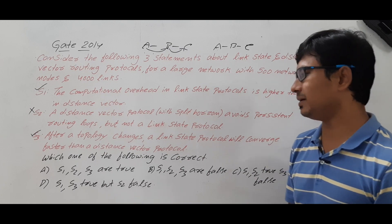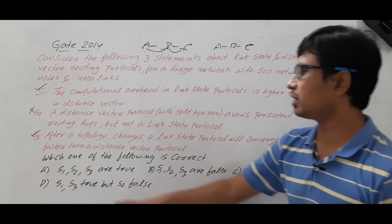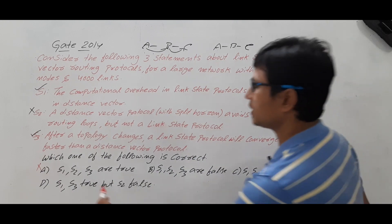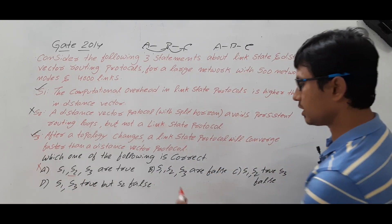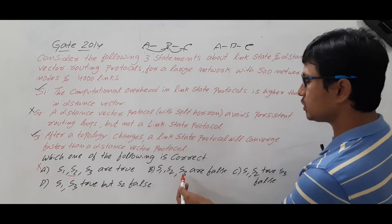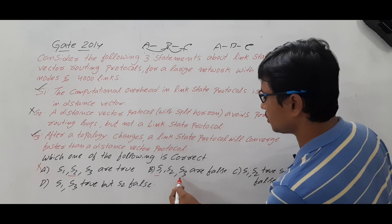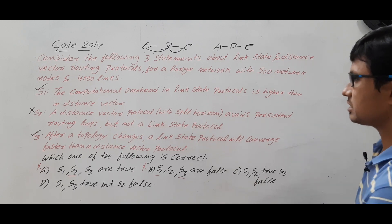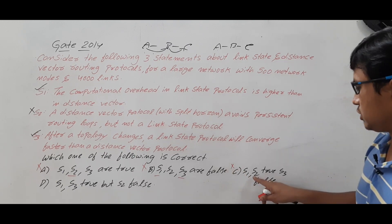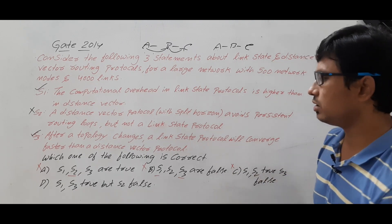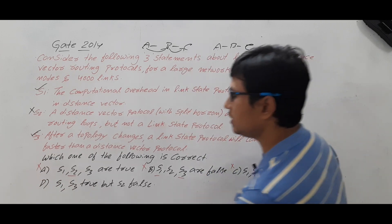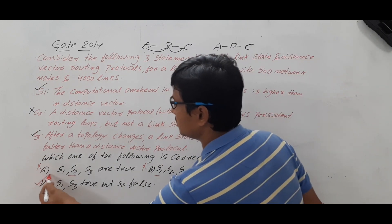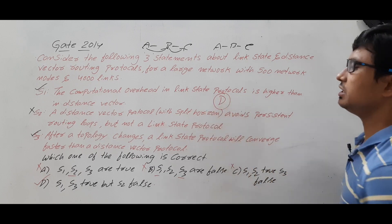Option A says S1, S2, S3 are all true — but S2 is wrong, so option A is not correct. Option B says S1, S2, S3 are all false — but S1 and S3 are true, so option B is also wrong. Option C says S1 and S2 are true and S3 is false — that is wrong because S2 is false and S3 is true. Option D says S1 and S3 are true and S2 is false — yes, that is correct. So for this question, option D is the right answer.